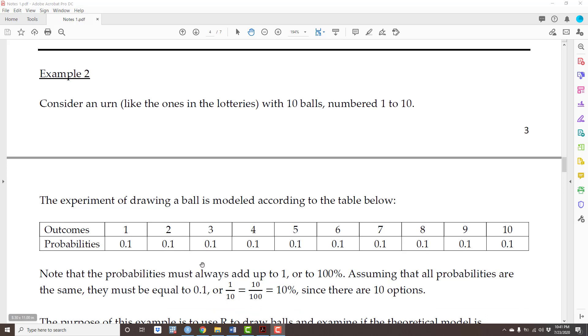Or 10%. Remember, the probabilities have to add up to 1, which is the same as saying that they have to add up to 100%. We are assuming that all probabilities are the same, that's why they have to be equal to 0.1 each.